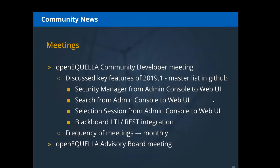At the most recent community developer meeting we discussed the key features of 2019.1. The master list is being created in GitHub under an issue milestone and will be updated automatically — you're welcome to go out and take a look. Some of the key features include more porting of functionality from the admin console to the web UI, the security manager search function, and the selection session, as well as getting the Blackboard LTI REST integration set up by 2019.1.